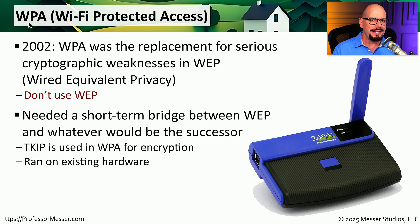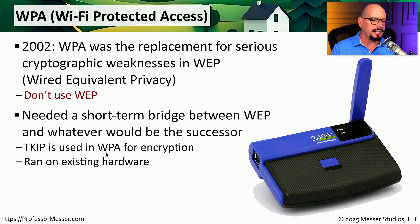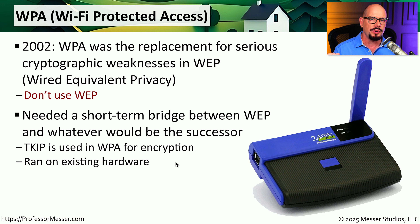This first implementation of WPA was designed to be a stopgap. It was designed to prevent any of the cryptographic problems we had with WEP, but we knew we needed something longer term in the future. One of the technologies associated with this WPA stopgap was that it encrypted using a technology known as TKIP. This TKIP encryption ran on the existing access point hardware, which means we could still provide security over these wireless networks without having to replace any of our physical access points.